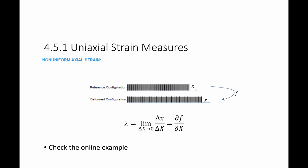So in this case, I want to calculate lambda locally. So I calculate lambda by taking a small delta x, delta x, which is basically just this small delta x, and divide it by capital delta X, and take the limit as delta x goes to zero. Which is basically partial f by partial X, and f is the function that maps from the reference configuration X to the deformed configuration small x. And you have an online example that shows you how this can be done.